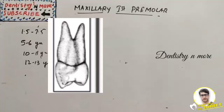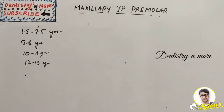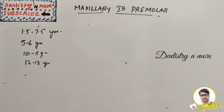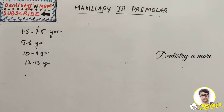That is all about the maxillary first premolar. The special feature of this tooth is the concavity present on the mesial side. Many features are on the occlusal side, such as the central groove, triangular fossa, and developmental grooves. This is also a commonly asked question in exams. I will cover the maxillary second premolar in the next session. Thank you.